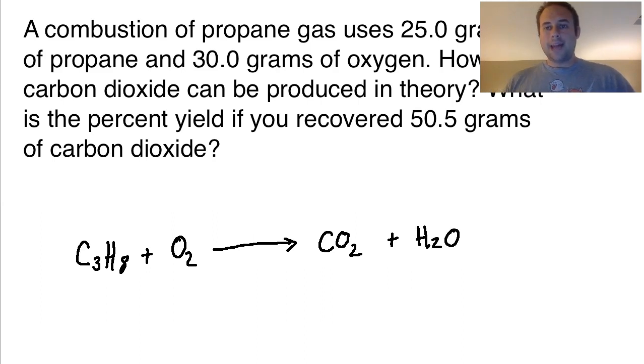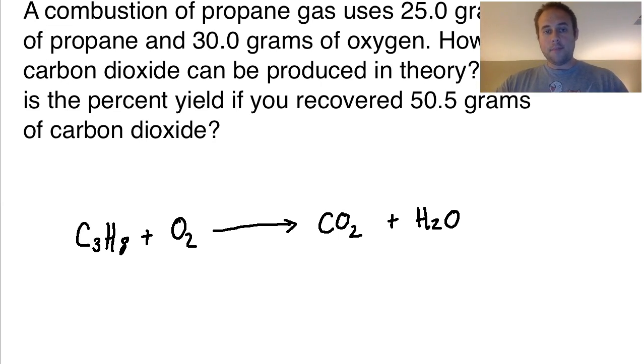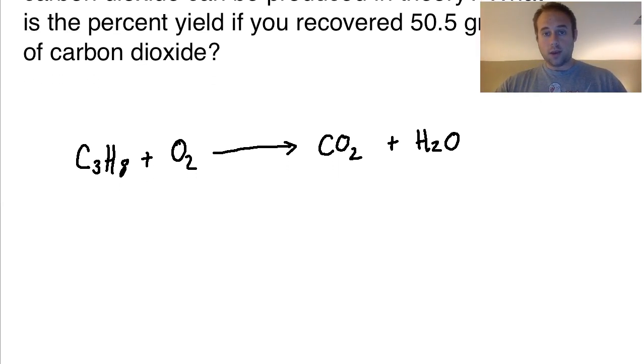So this is not balanced at this point. We want to make sure that we have a balanced equation that we're going to be working with before we get started on all of the math. So what I would do here, I always teach students to balance one atom at a time on each side. So we say how many carbons are there? There's three on this side due to the propane. And then how many are over here? I only see one due to the carbon dioxide. So what I'm going to need is a three in front of my CO2 value.